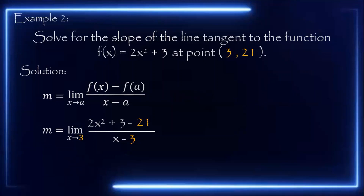We simplify the numerator by combining like terms: positive 3 minus 21 gives negative 18. So the function becomes 2x squared minus 18 all over x minus 3, as x approaches 3. Using direct substitution with x = 3 gives 0 over 0, which is indeterminate form. Therefore the limit exists, so we will use the factoring method to solve for the correct limit.